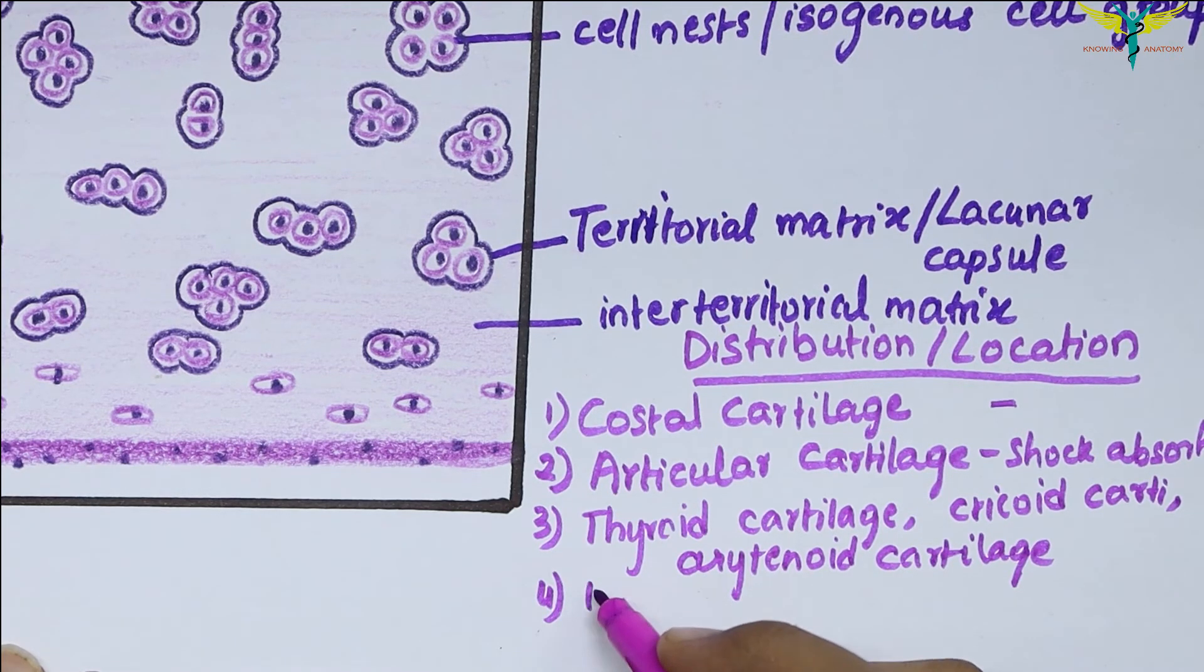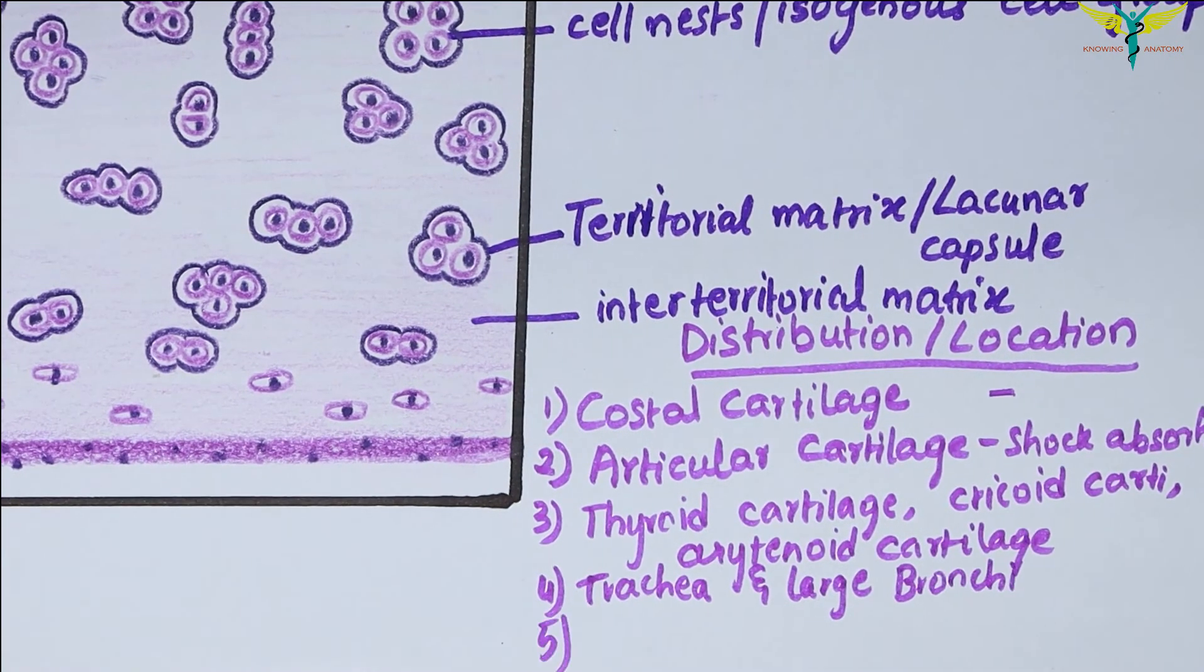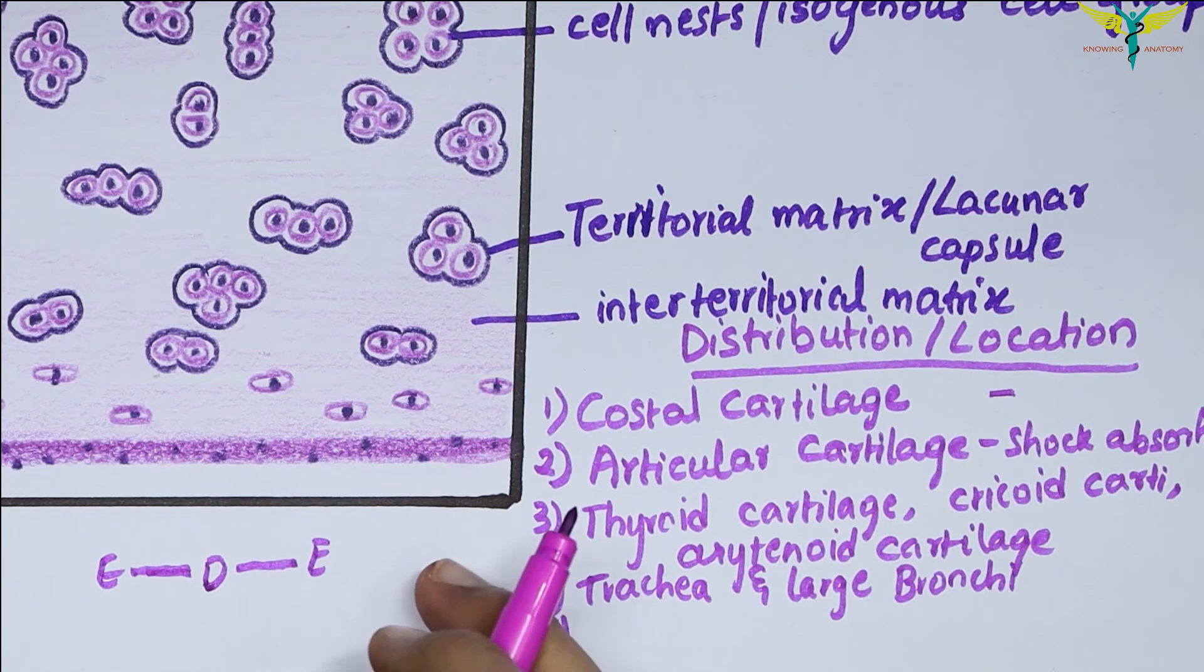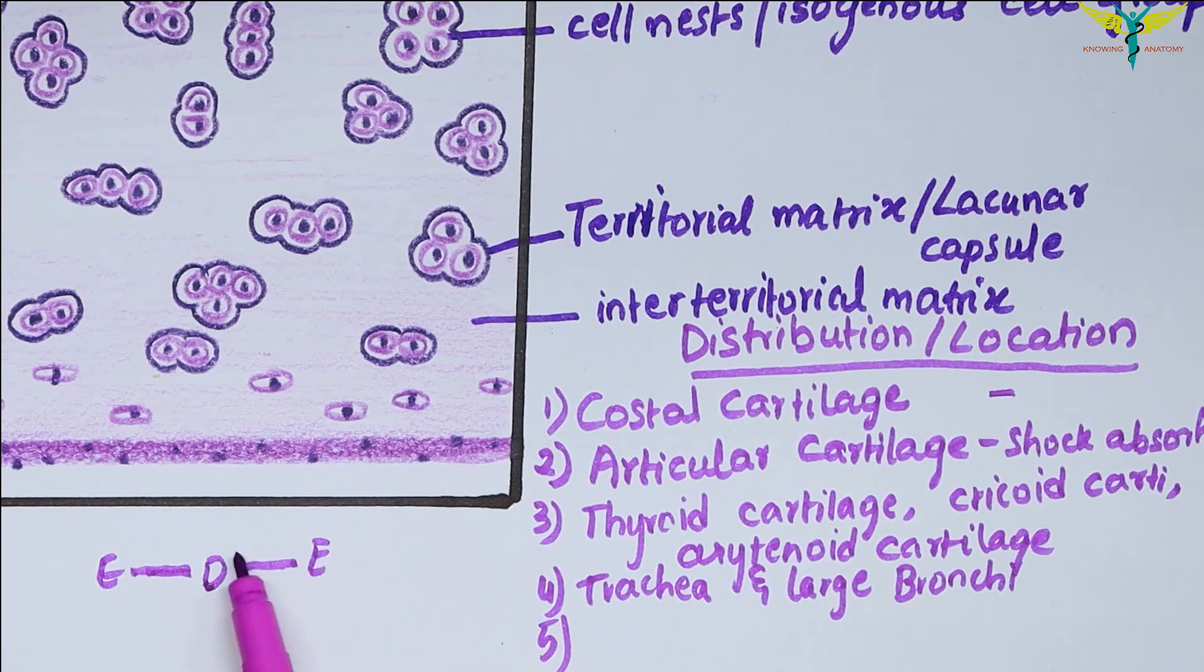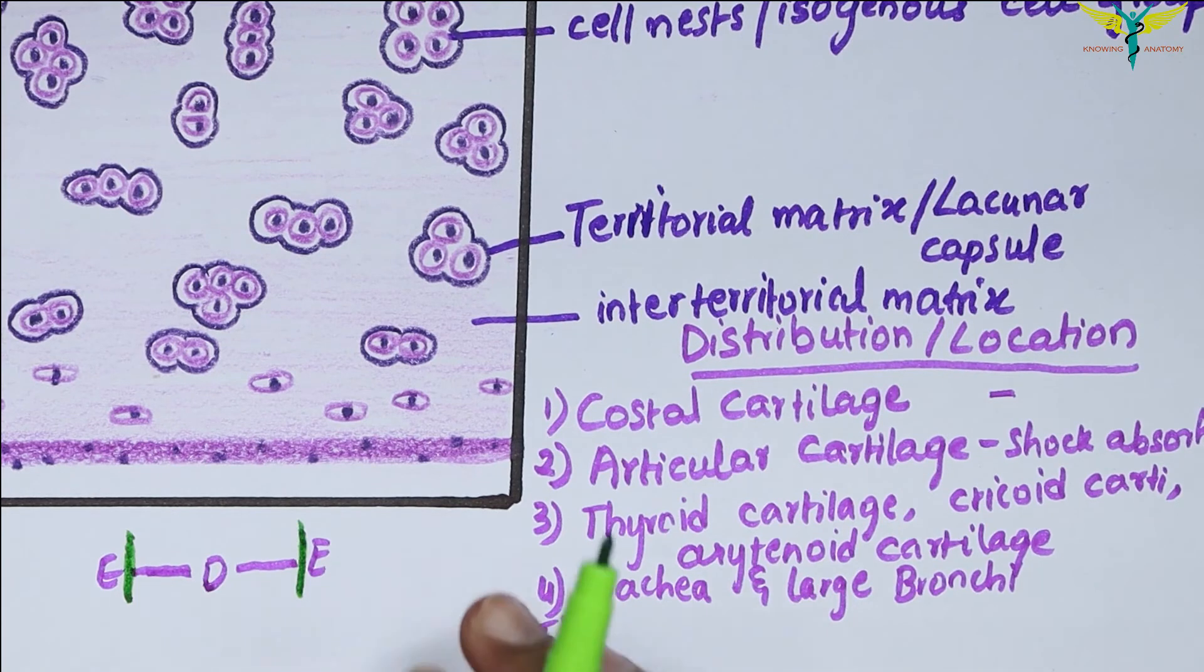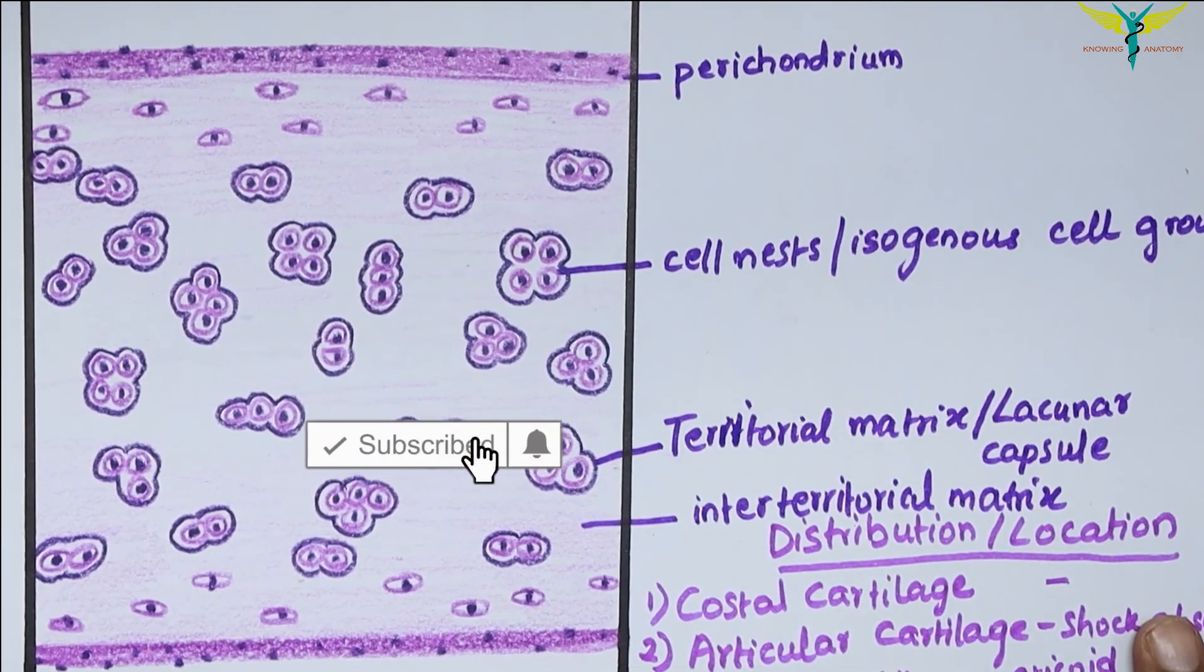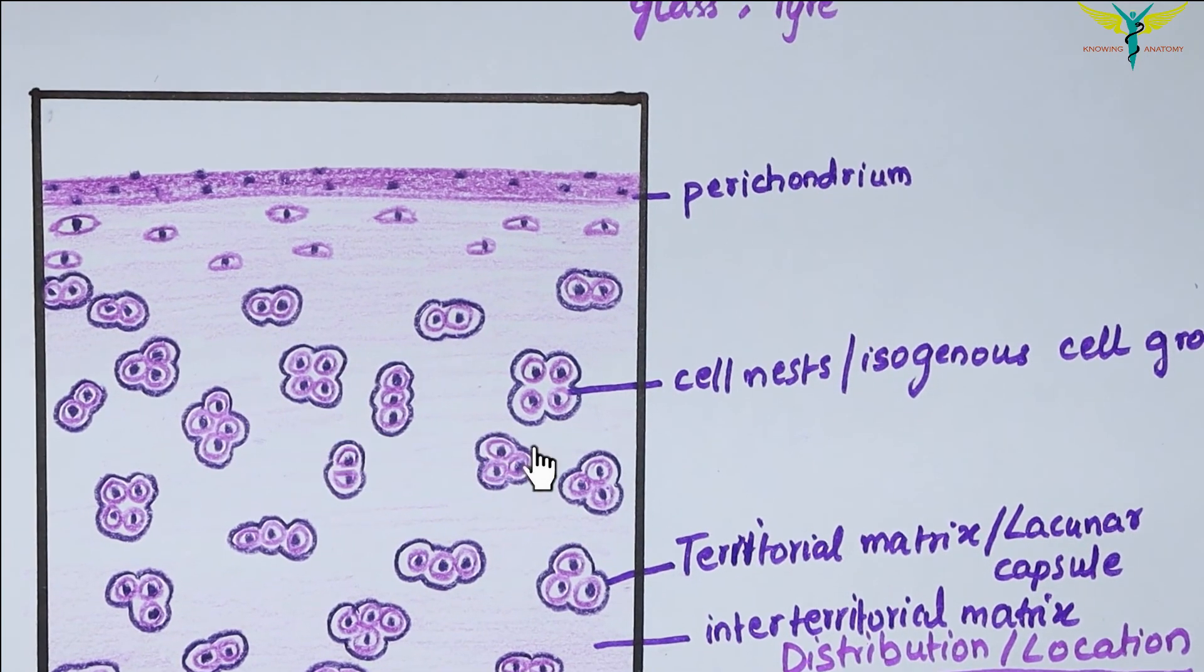In growing children, the long bones consist of a diaphysis that corresponds to the shaft of the bone and one or more bony epiphyses that correspond to the ends. Each epiphysis is connected to the diaphysis by a plate of the hyaline cartilage, and this plate is called as the epiphyseal plate. This epiphyseal plate is very essential for bone growth. So this is all about the hyaline cartilage.